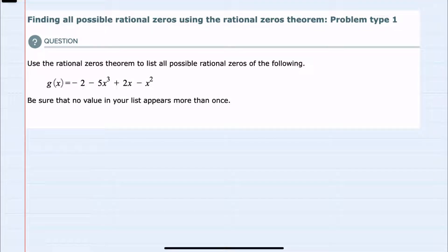In this video, I'll be helping you with the ALEKS problem type called finding all possible rational zeros using the rational zeros theorem, problem type 1.